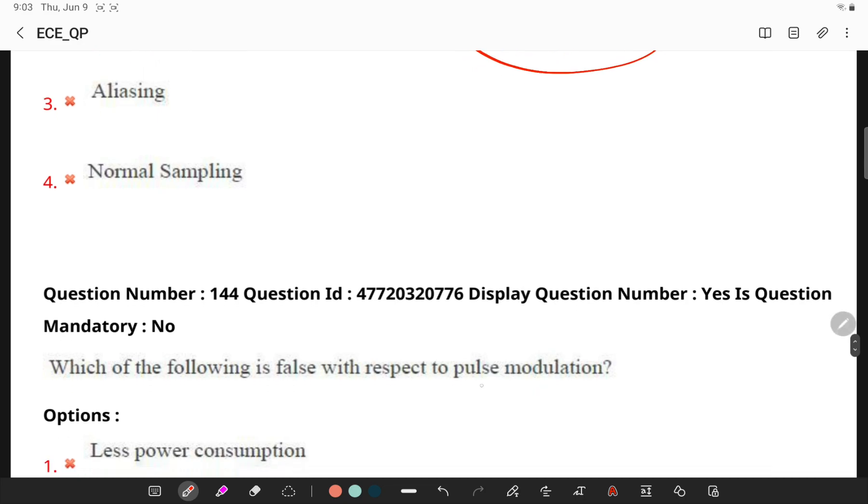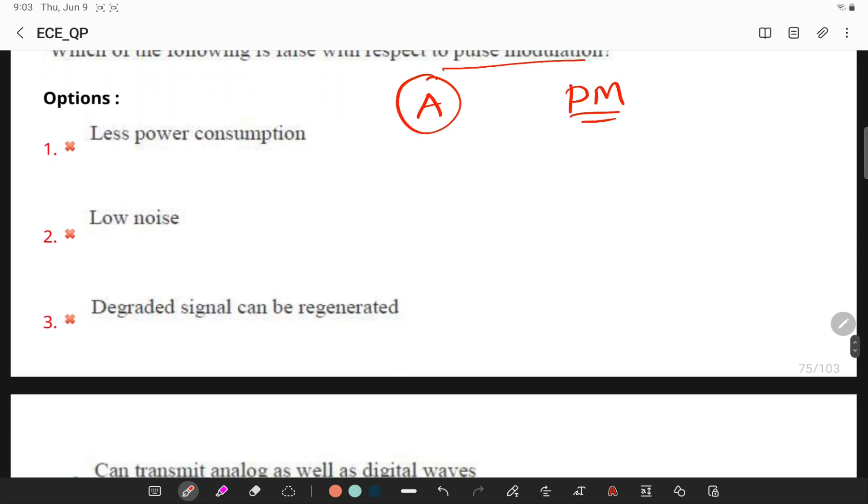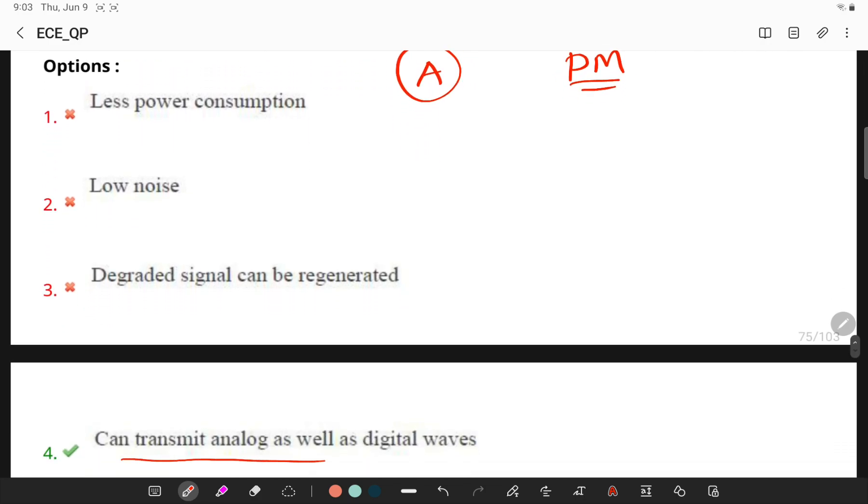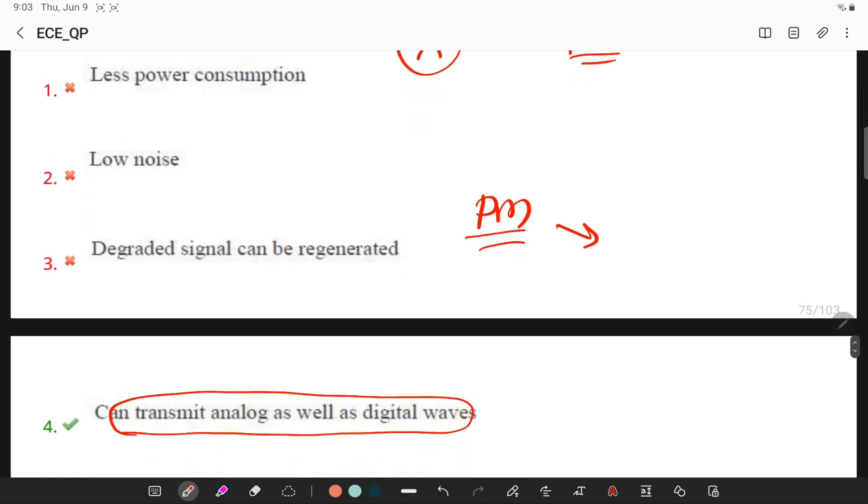Next, which of the following is false with respect to pulse modulation? Remember, analog values cannot be transmitted such as in pulse modulation. So you cannot transmit analog values as well as digital values because pulse modulation, you can if you observe, you can only transmit binary data.